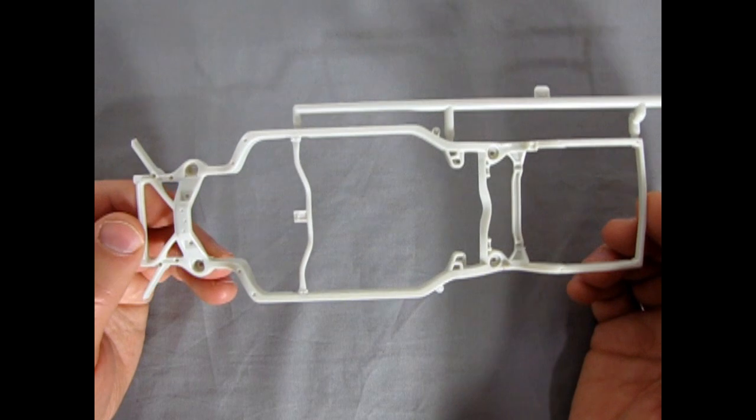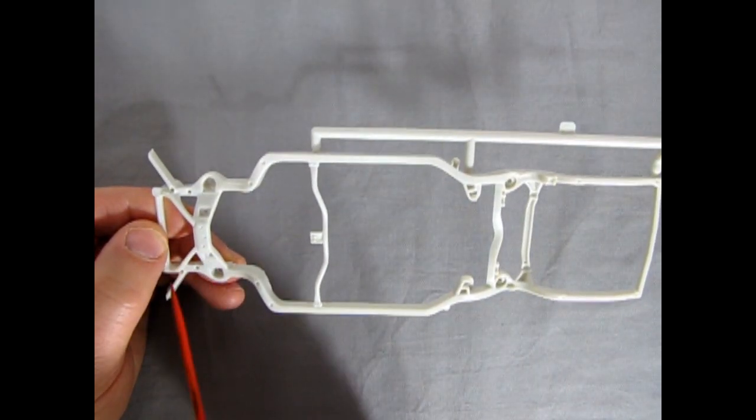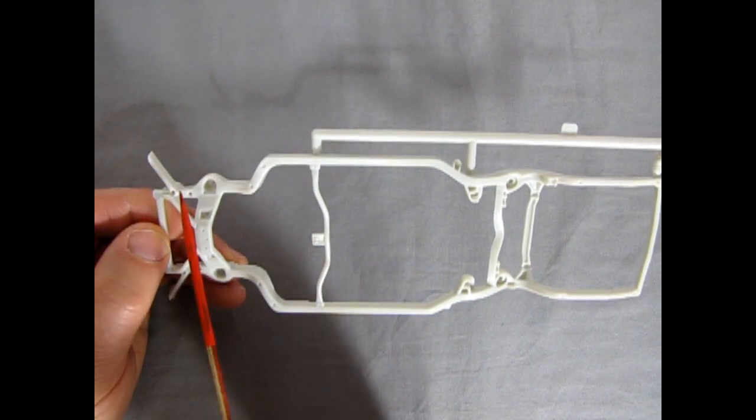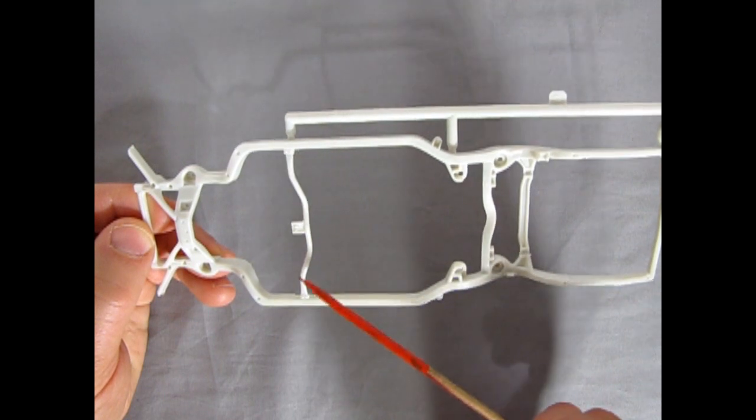That, of course, is for mounting items like upper control arms, the springs, exhaust pipes, all kinds of stuff. Got the bracket for the transmission sitting there. As well as in the rear, you got your coil spring area.